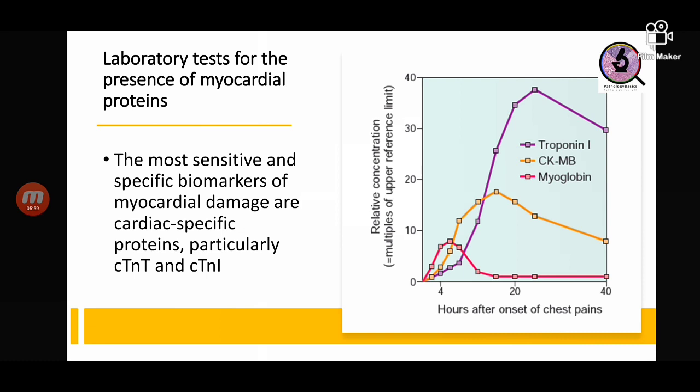CKMB has various isoforms — CKMB, CKMM, and CKBB — of which CKMB is quite specific for cardiac muscle. Looking at the graph: myoglobin rises immediately after infarction, peaks around four hours, and returns to normal within 15 to 20 hours. CKMB starts rising 2 to 3 hours after infarction, peaks around 16 to 17 hours, and remains raised even after the peak.